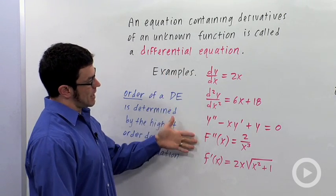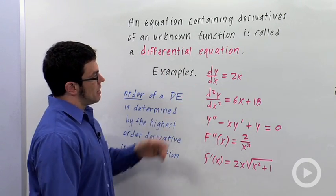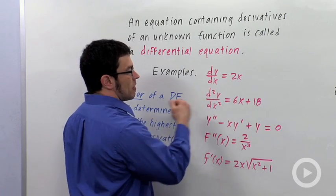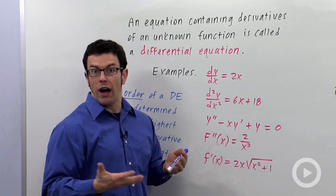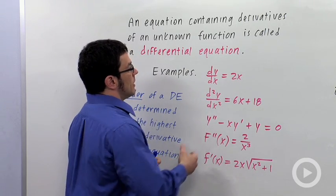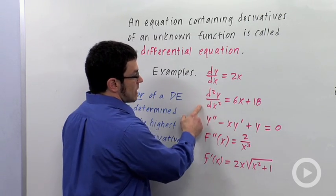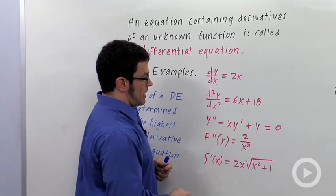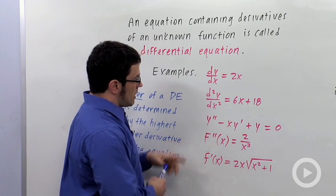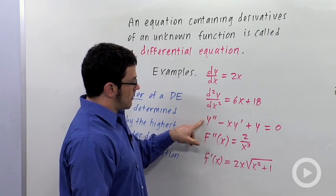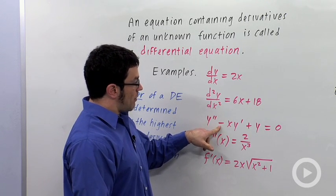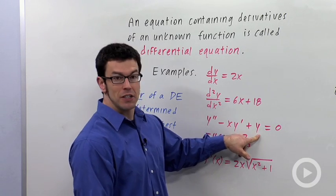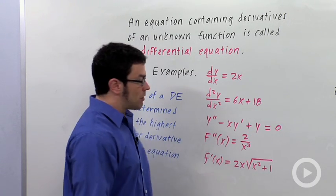I have some examples here. dy/dx equals 2x — here the unknown function would be y. The second derivative of y with respect to x is 6x plus 8. Here the second derivative minus x times the first derivative plus the function itself equals 0.